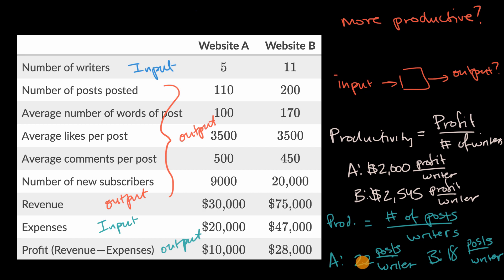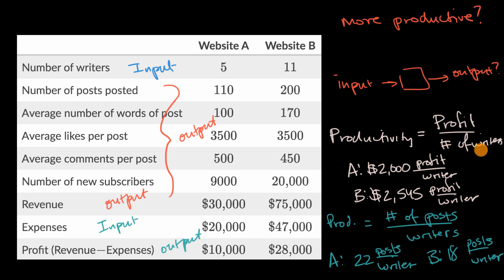Hopefully this gives you a general sense of what productivity is and an appreciation that there are multiple ways of measuring it. You could do much fancier things — define productivity as a whole combination of outputs divided by a combination of inputs. For example, posts posted times average words, plus average likes per post, plus comments per post, divided by number of writers and expenses. The general notion is: take some combination of outputs and divide by some combination of inputs, and you can decide how to mathematically combine them.